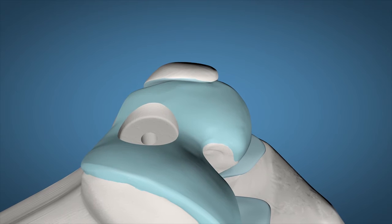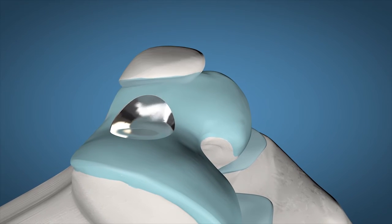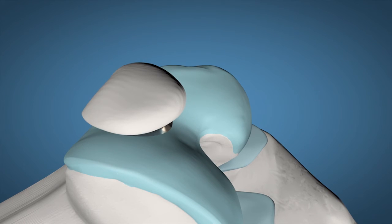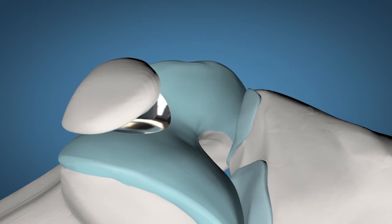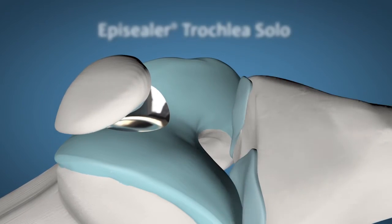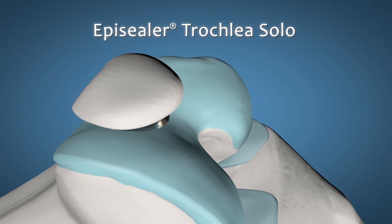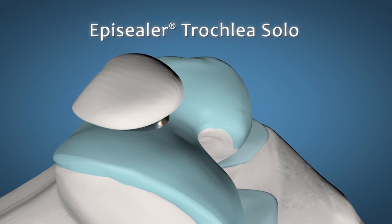The implant is now firmly inserted and sealed to the bone tissue beneath. The position and topography are perfect fits to the surrounding cartilage and provide an optimal surface for the patella to once again slide over the trochlear area.